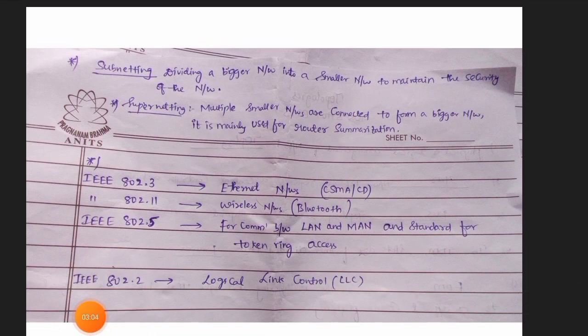Coming to IEEE 802 standards, this is very important. 802.3 is Ethernet. 802.11 is wireless networks, that is Bluetooth. 802.5 is for communication between LAN and MAN and is the standard for token ring access. 802.2 is for logical link control.